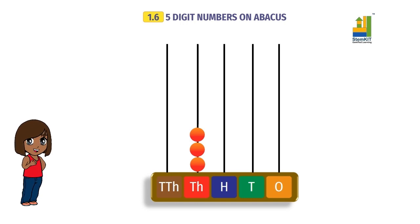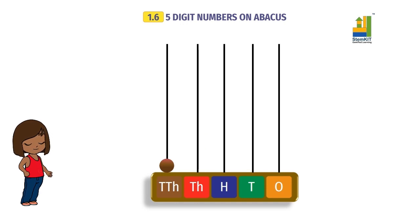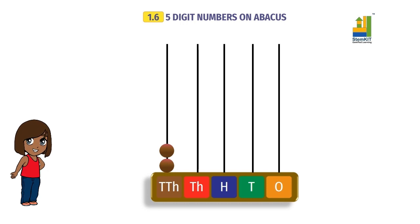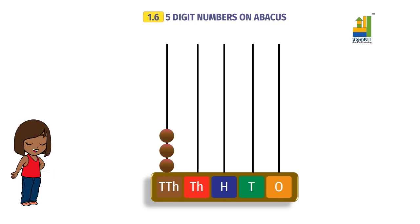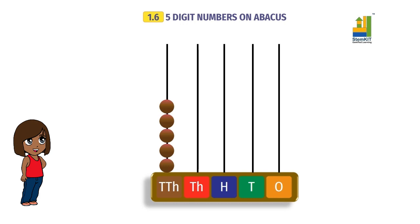I think you are understanding this pretty well — good job! Now, for the ten thousands spike: one bead means one ten thousand, or ten thousand. Two beads means two ten thousands, or twenty thousand. Three beads means thirty thousand. Four beads means forty thousand. Five beads means five ten thousands, or fifty thousand.